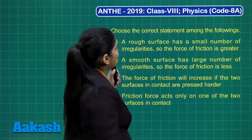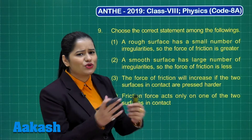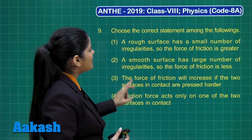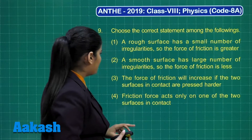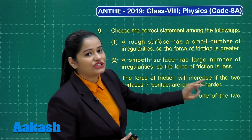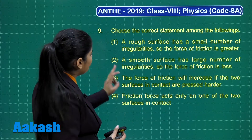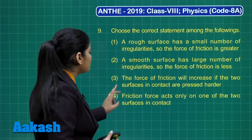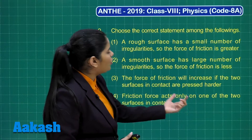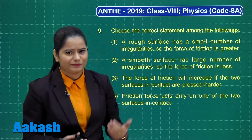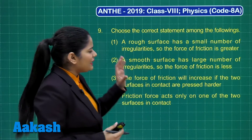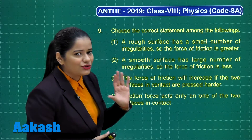Question 9 says: choose the correct statement among the following. Statement one says a rough surface has a small number of irregularities so friction is greater. Statement two says a smooth surface has a large number of irregularities so friction is less. Statement three says friction will increase if the surfaces in contact are pressed harder. Statement four says friction acts only on one of the two surfaces in contact.